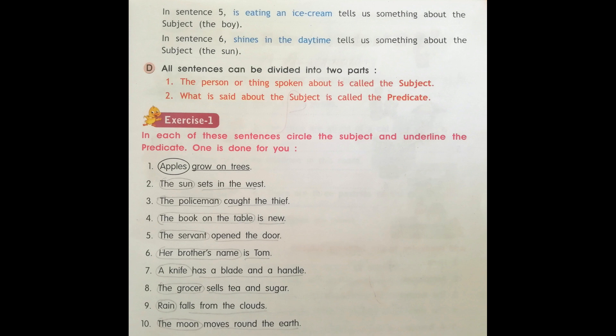Number seven: A knife has a blade and a handle. A knife is the subject. Has a blade and a handle is the predicate.